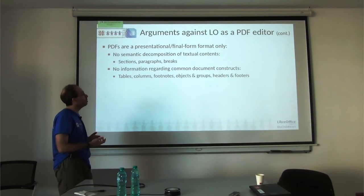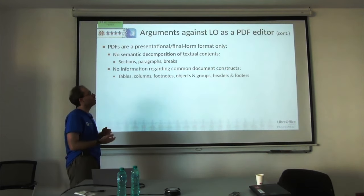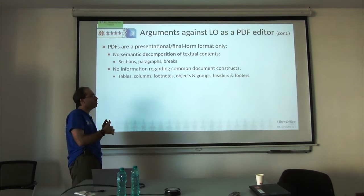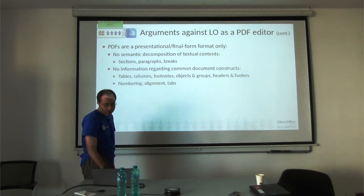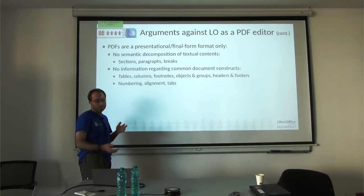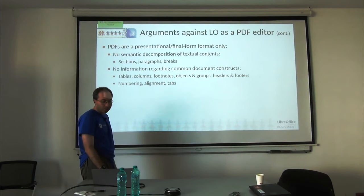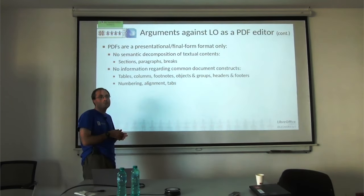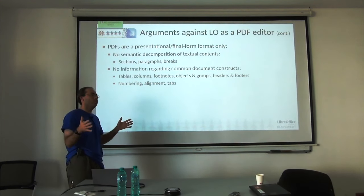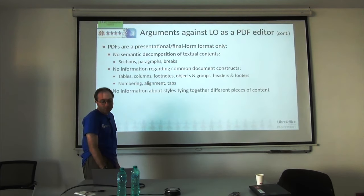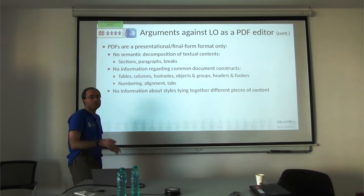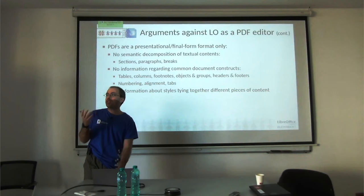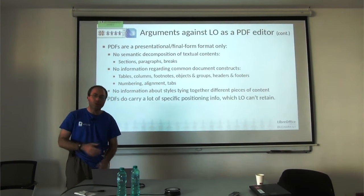Things like tables, columns, document objects, groupings, what's the header or the footer as opposed to the main part of a page, what's the footnote, et cetera. And also things like numbering as opposed to just text, or how text is aligned. We do have positioning information, but there's nobody saying that means this text is justified or on the left edge of something. And certainly not things like tabs, and not really any style information.